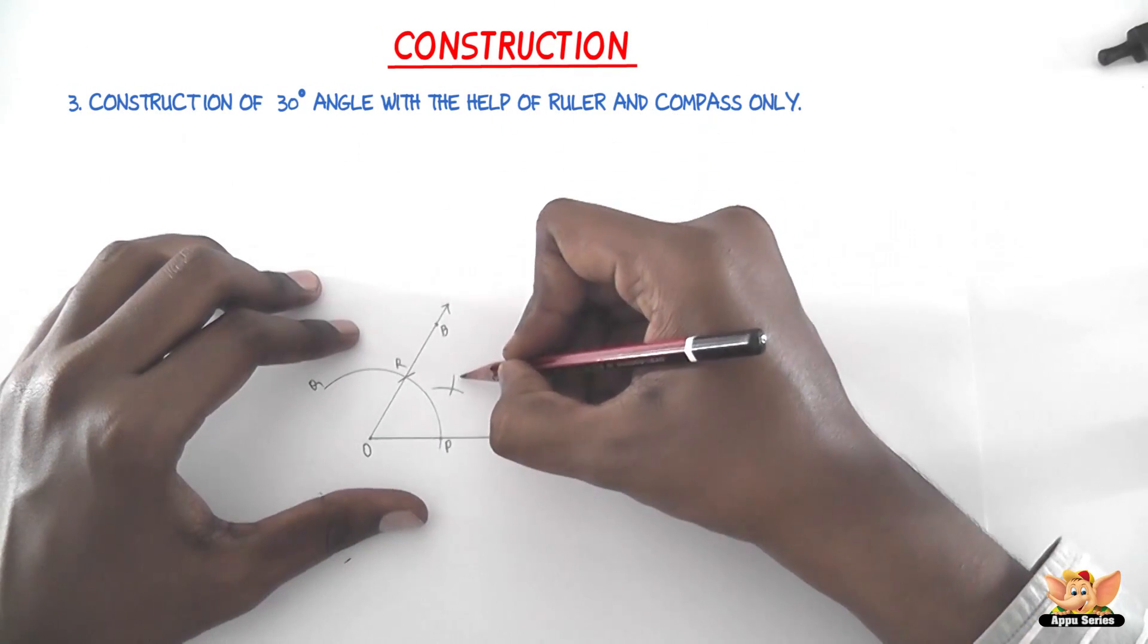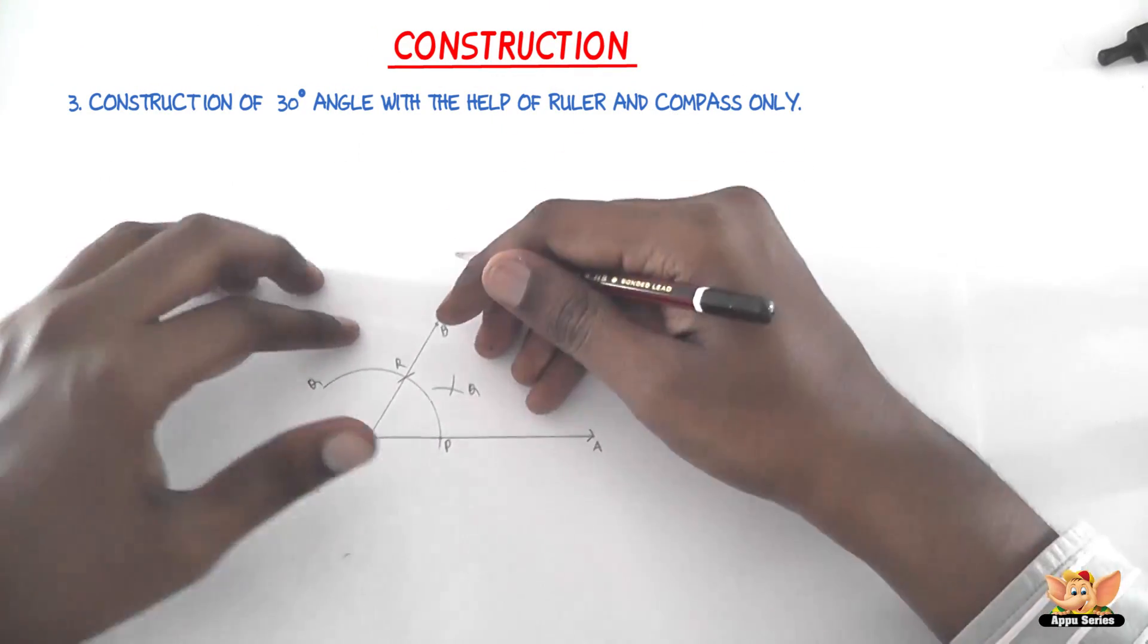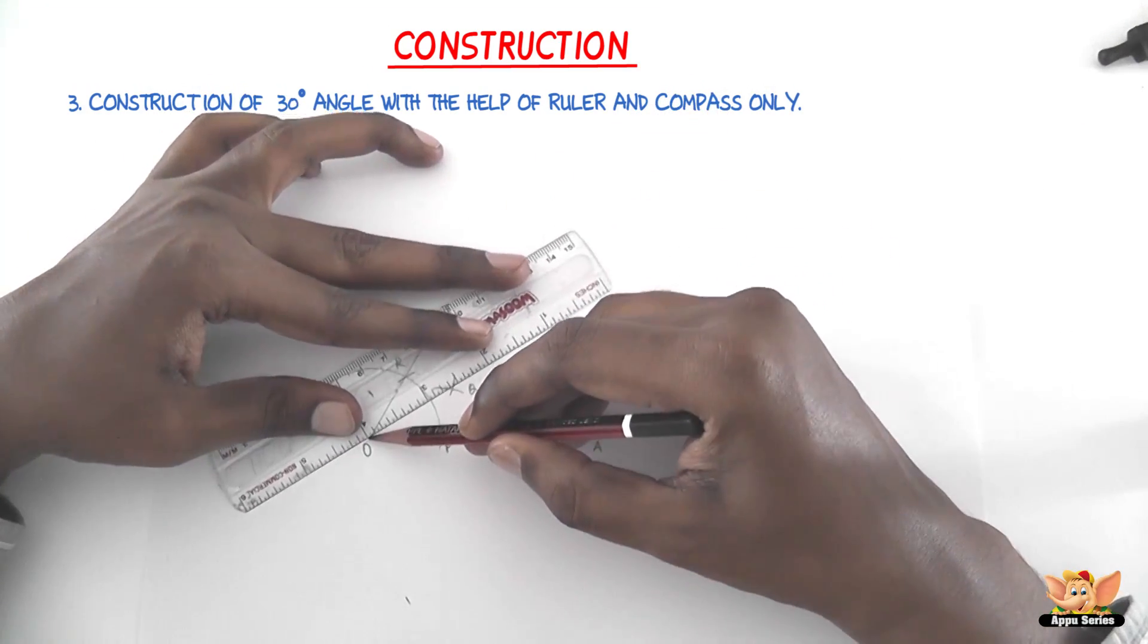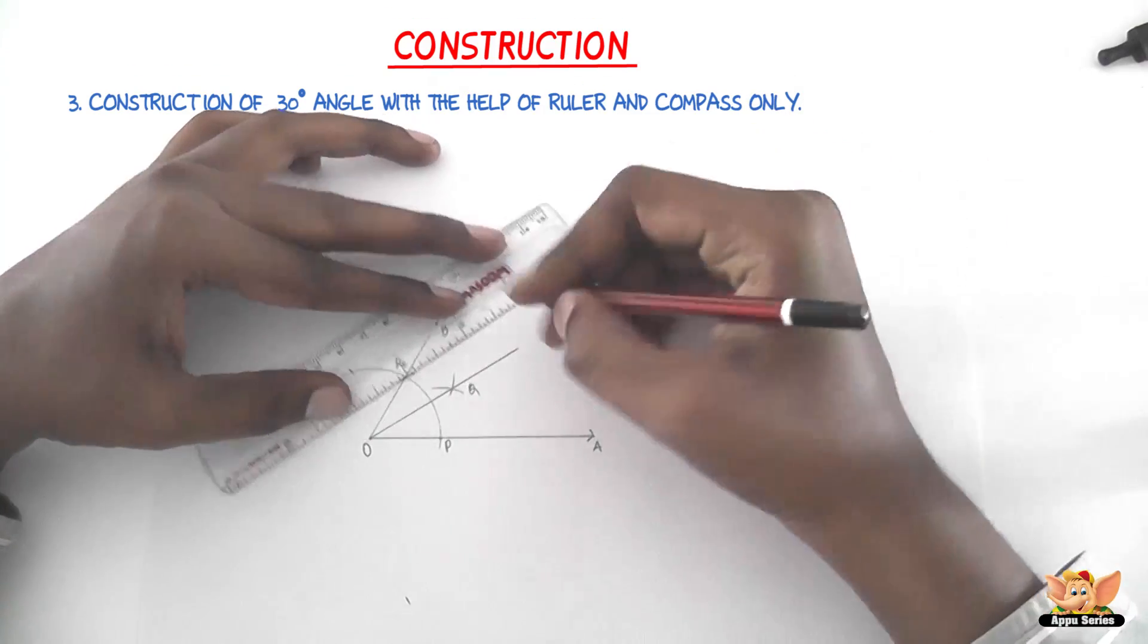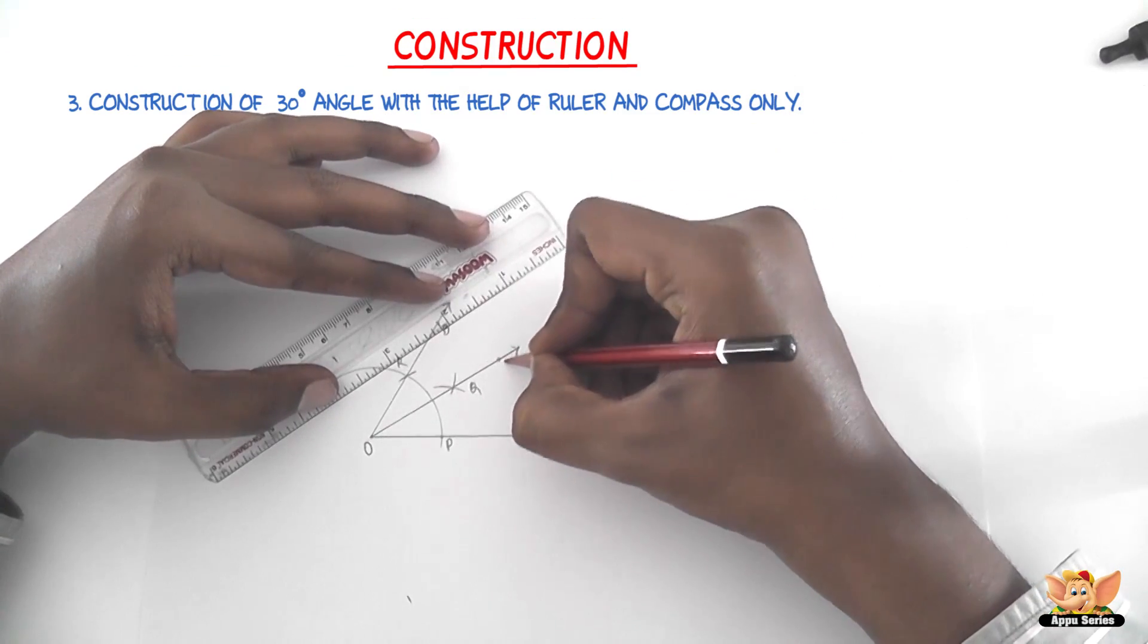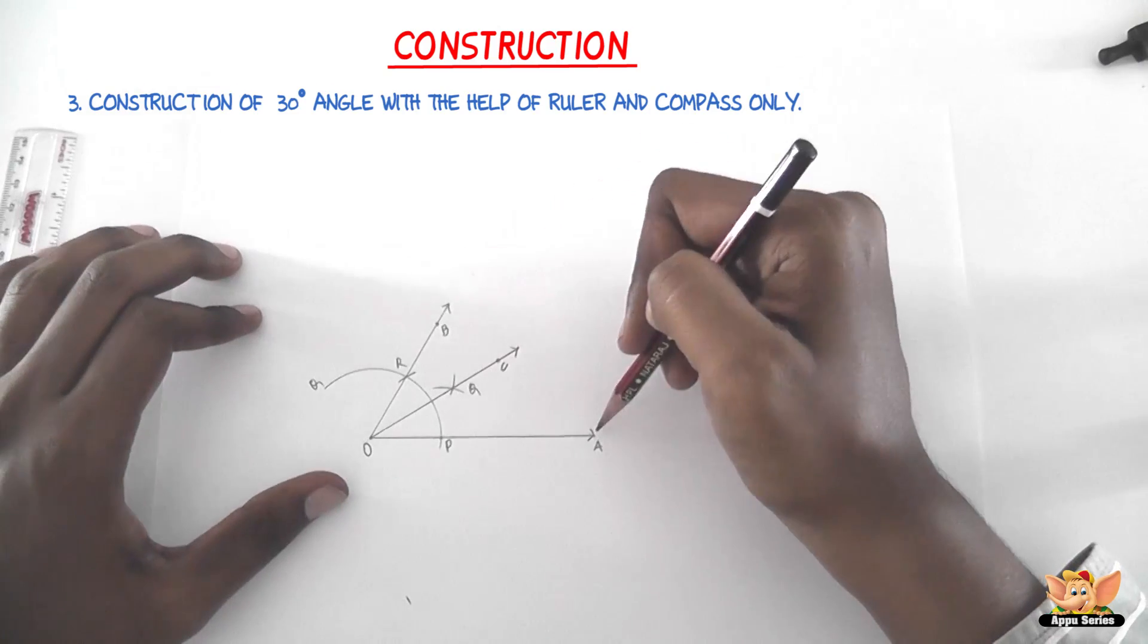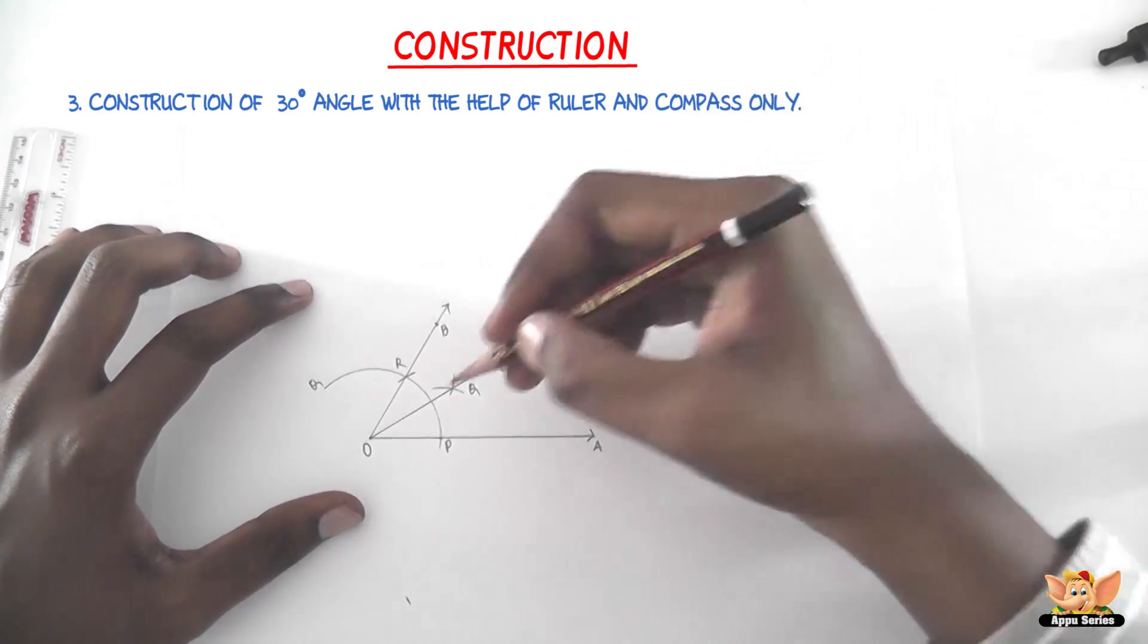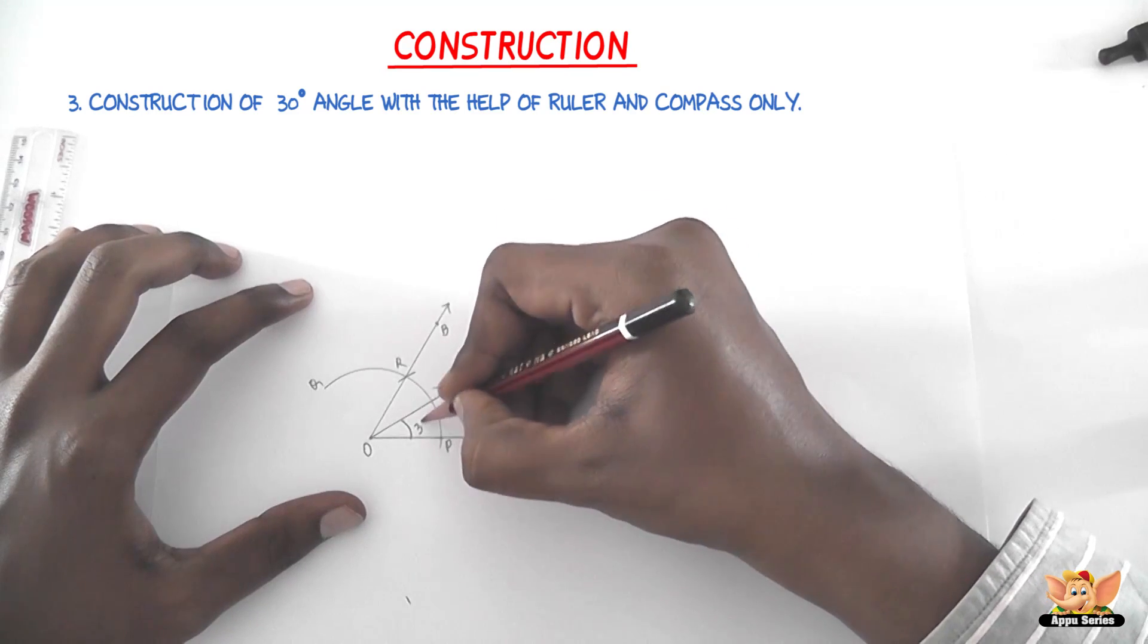Name that Q. Now join OQ and produce it to meet at C. The angle AOC so obtained is exactly half of 60 degrees, which is 30 degrees.